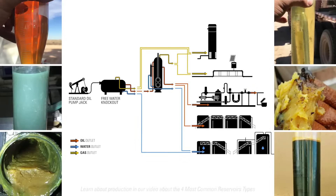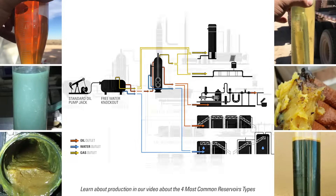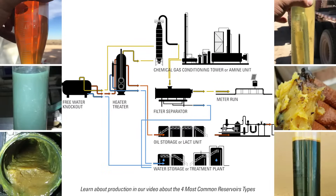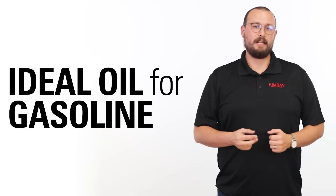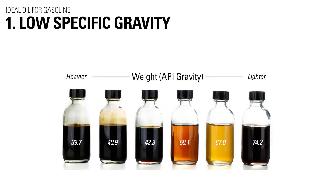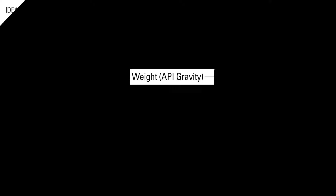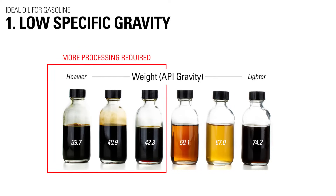Crude oil that comes out of the ground has to go through a lot before it gets to your car. The ideal oil for gasoline production has two characteristics. The first one is that it's low in its specific gravity. Specific gravity refers to how thick or heavy the crude oil is. The thicker and heavier it is, the more processing that is required, and the harder it is to make end products like gasoline.